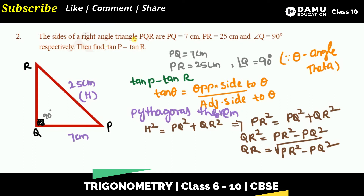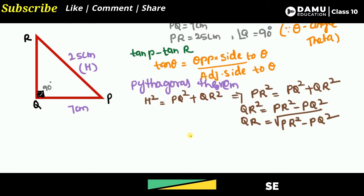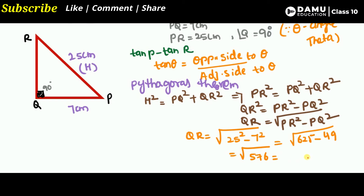Substituting the values: QR equals square root of 25 squared minus 7 squared, which is square root of 625 minus 49, which equals square root of 576. We can write 576 as 24 squared, so the square root cancels and QR equals 24 centimeters.